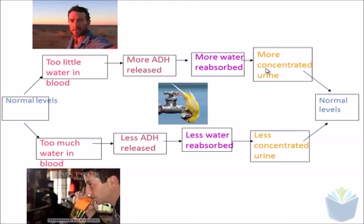And if you're just to go by color, the more concentrated urine would be more yellow, while the less concentrated urine would be less yellow.